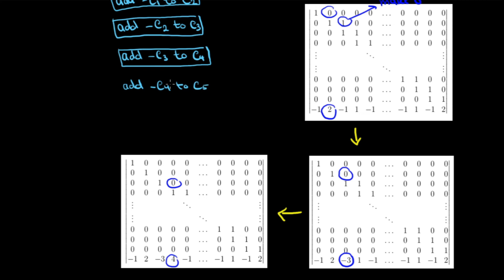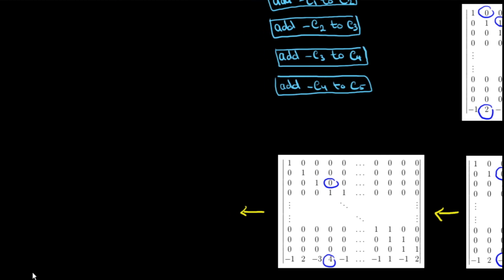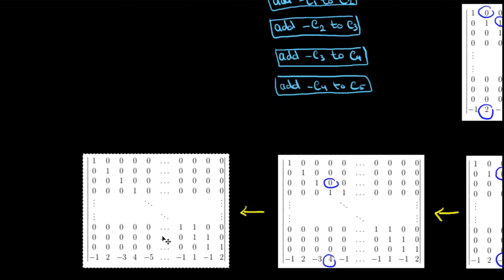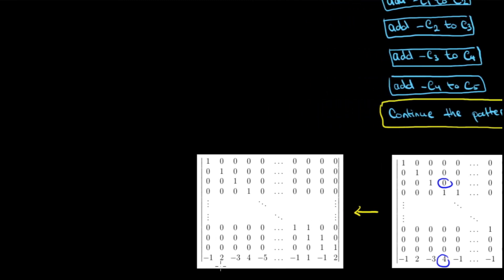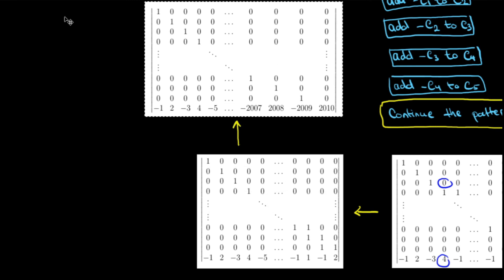Again, we add minus c4 to c5 and get a new matrix. We can see the pattern: we have zero and then minus 5 here. We keep doing this until all the ones just above the diagonals become zero. Notice the last row changes as we continue. We continue this pattern — adding minus of the previous column to the next column — and we do that 2009 times. We will end up with a nice lower triangular matrix.